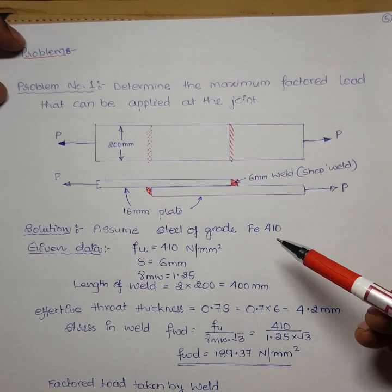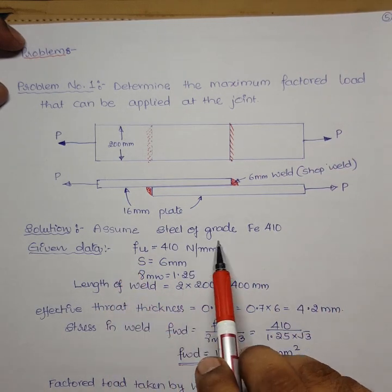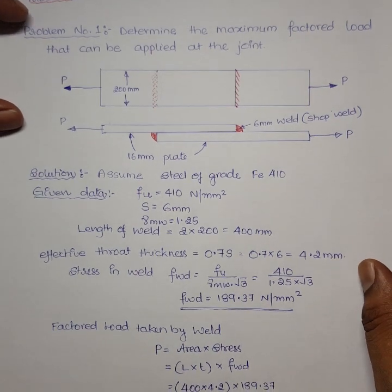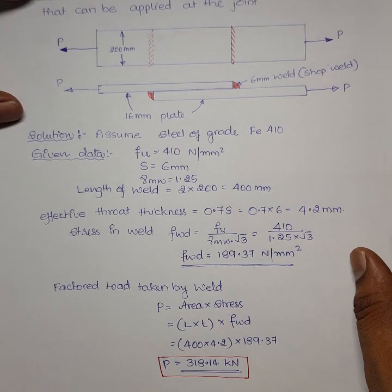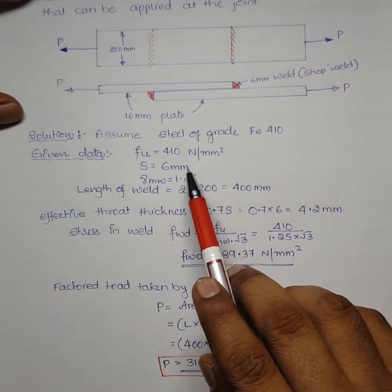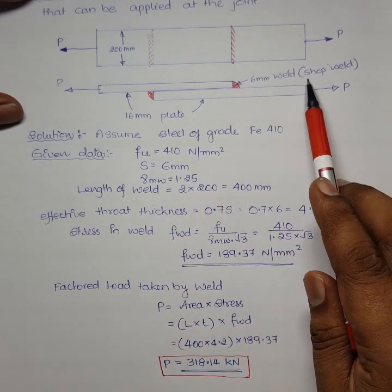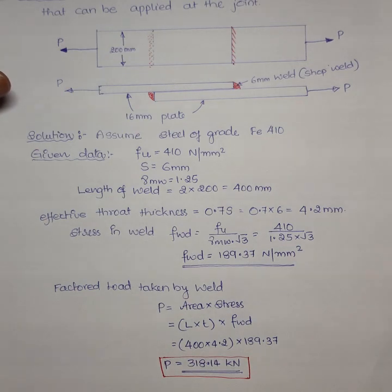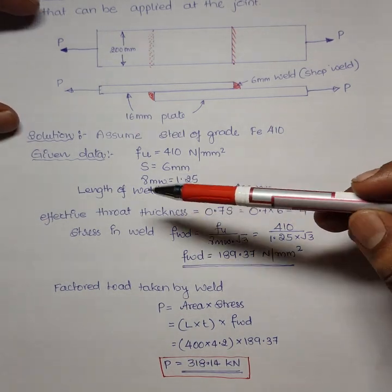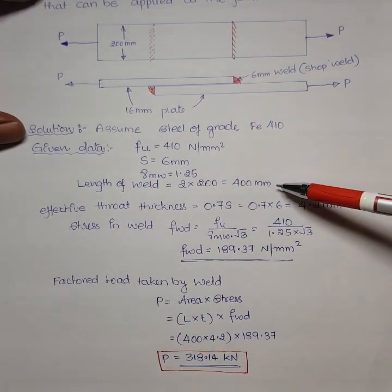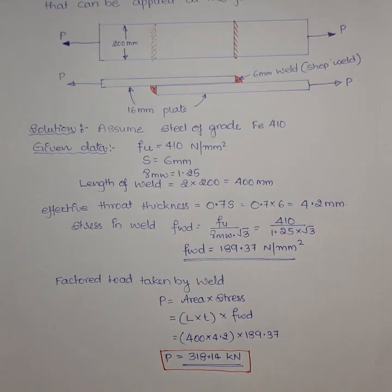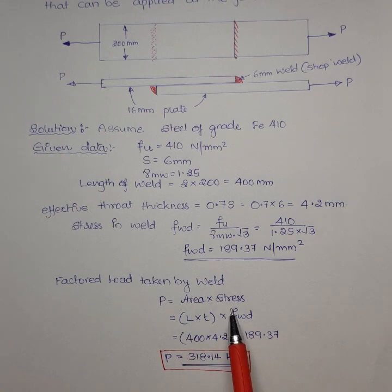Since the grade of steel is not given, assume grade fe 410, so fu = 410 N/mm². Size s = 6 mm; since it is a shop weld, γmw = 1.25 (from Table 5 of IS code). Total weld length = 400 mm. Factored load = area of weld × stress of weld.